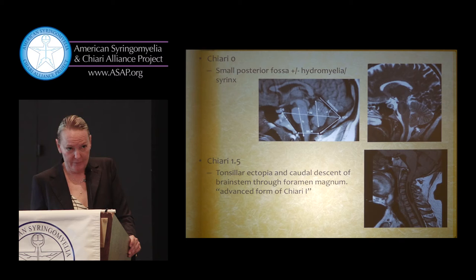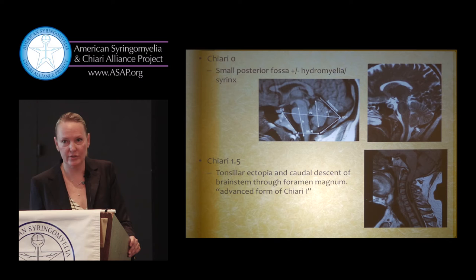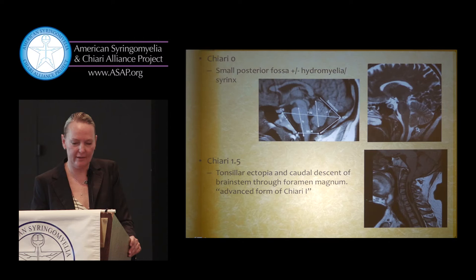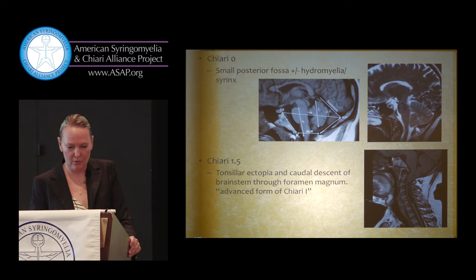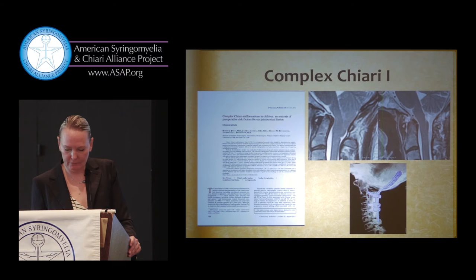Often a syrinx is associated with Chiari 0. When picked up by a radiologist, they may not notice the absent cisterna magna but they see the syrinx and the patient gets referred to a neurosurgeon. If the neurosurgeon is familiar with this, they'll notice there's a problem — the biggest problem being the lack of cisterna magna causing a circulation issue. If these patients get decompressed, even though they don't have tonsillar herniation, their syrinx usually gets better or goes away.